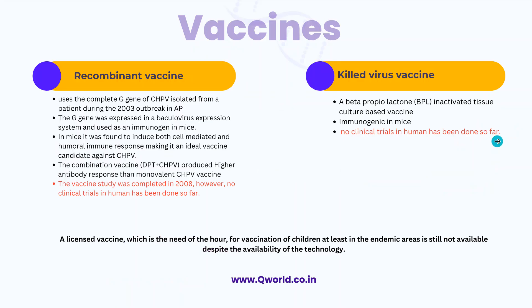There is currently no vaccine available for Chandipura virus, as no clinical trials have been done. However, two potential vaccines have been tested in animal models. One is a recombinant vaccine using the complete G gene expressed in a baculovirus expression system — it has shown strong cell-mediated and humoral responses, and when given with DPT vaccine, it mounts an even higher antibody response; this study was completed in 2008 in animals. The other is a killed virus vaccine — a BPL (beta-propiolactone) inactivated cell culture-based vaccine — which is also immunogenic in mice. Neither has undergone clinical trials, and a licensed vaccine for children in endemic areas is still not available.